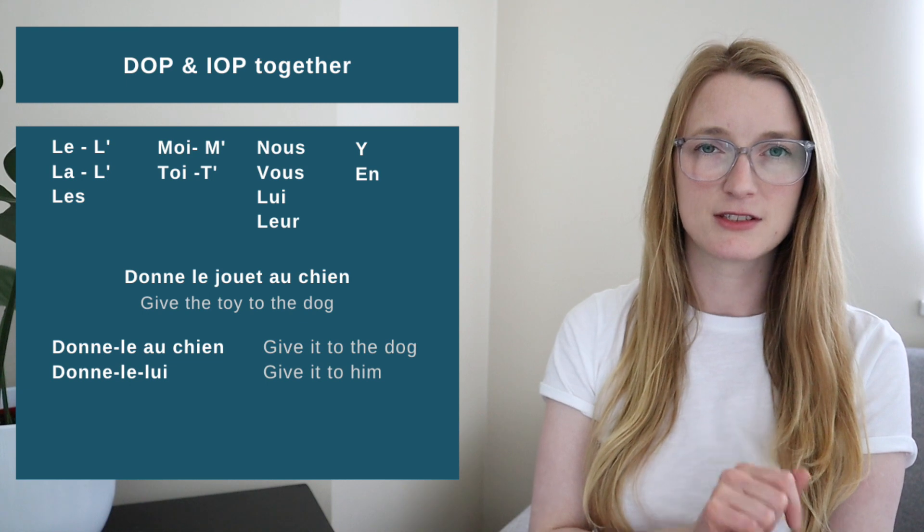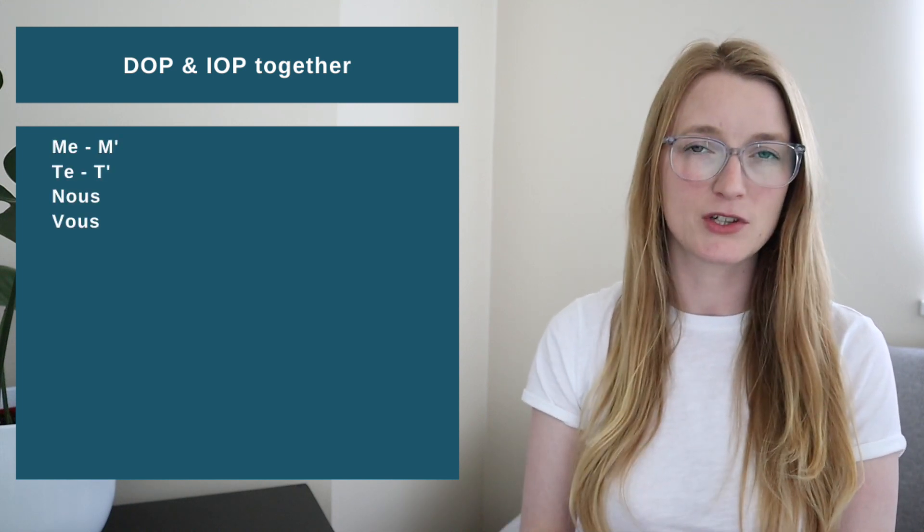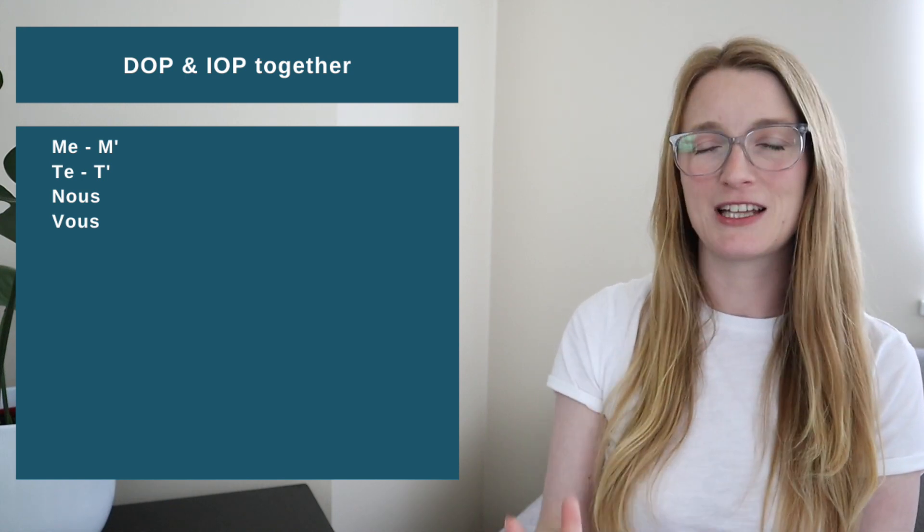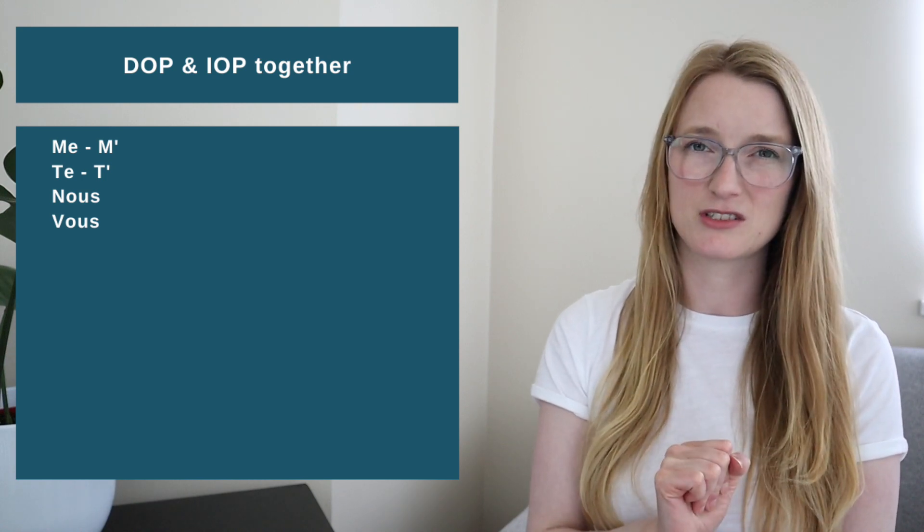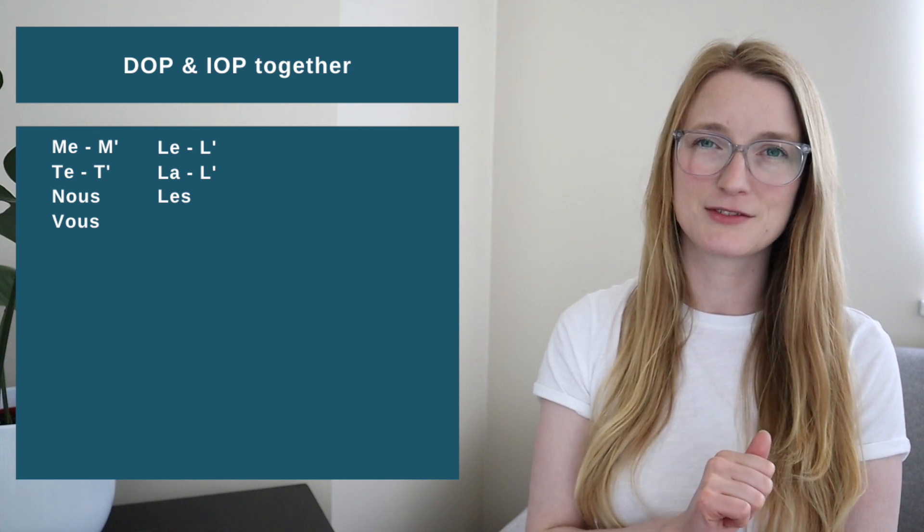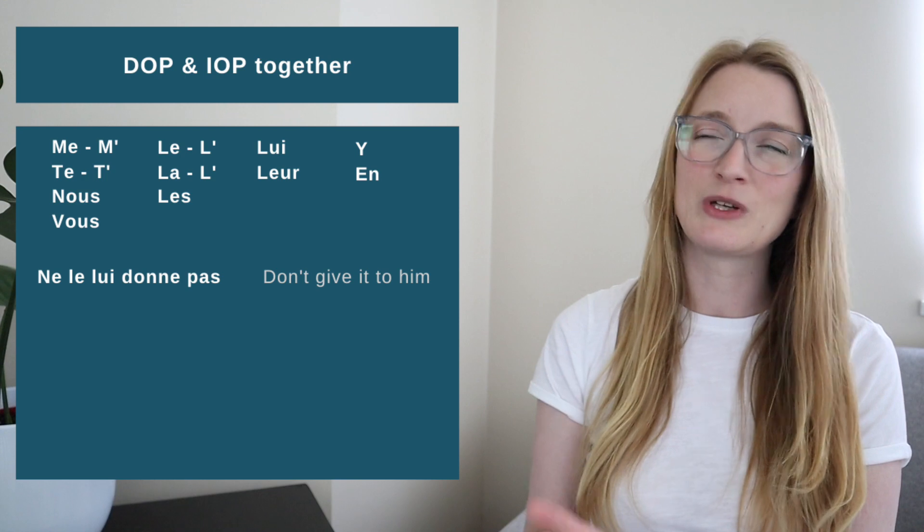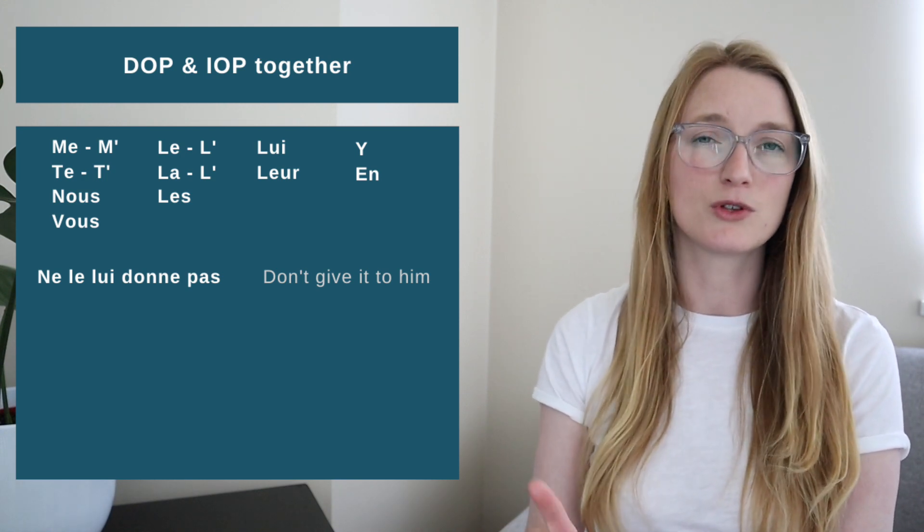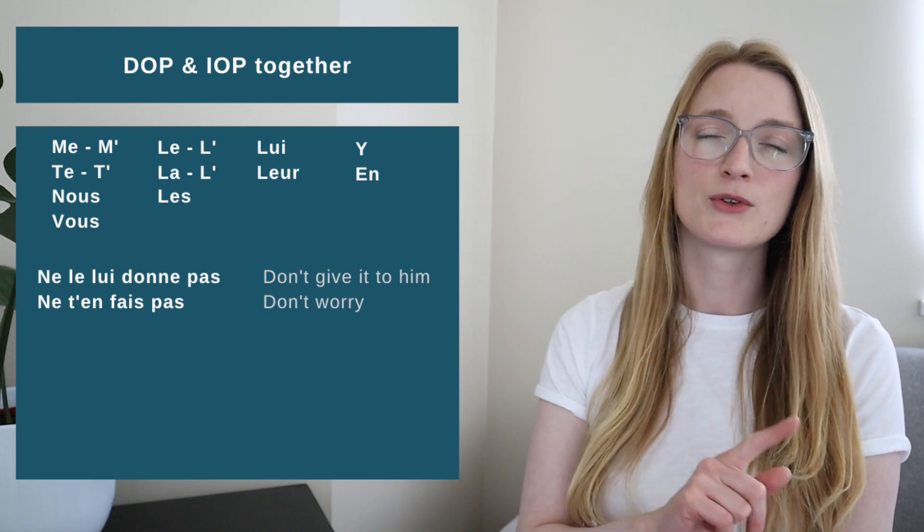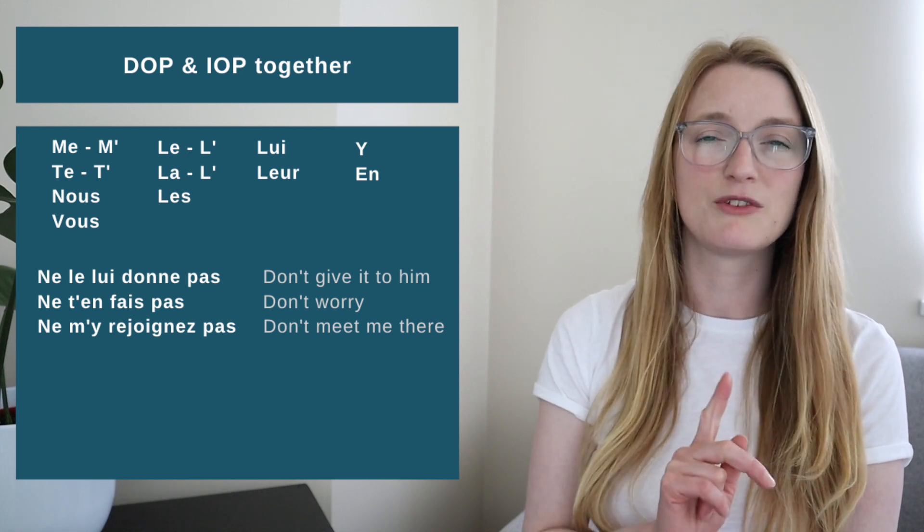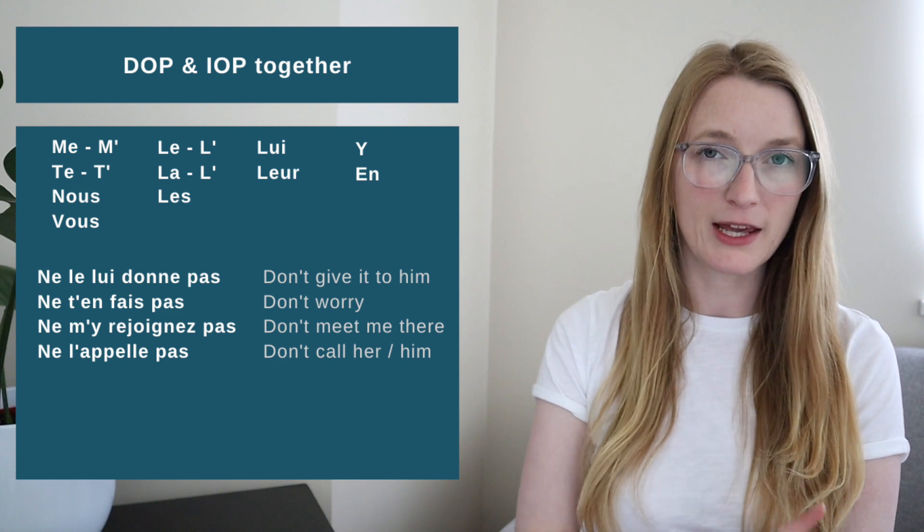In the negation, like I said, the order changes. We are going to have first Me or M apostrophe, so they come back as Me and Te because it's negative, it's before the verb. Me, Te, Nous, Vous. Then we have Le, La, and Les. Then Lui, Leur. So if we say Don't give it to him with Tu, we have Ne le lui donne pas. Don't worry: Ne t'en fais pas. Don't meet me there with Vous: Ne me rejoignez pas. Don't call her or him: Ne l'appelle pas.